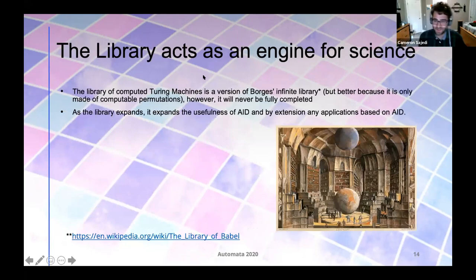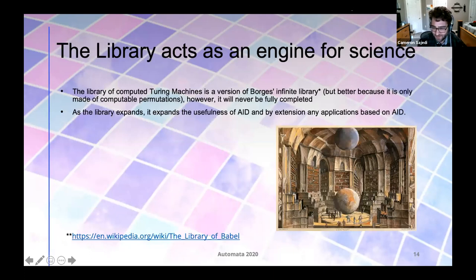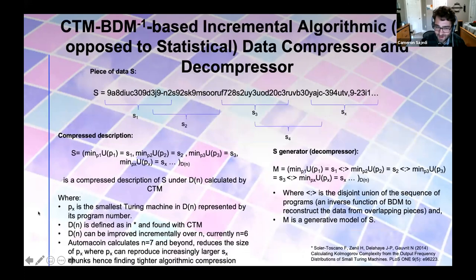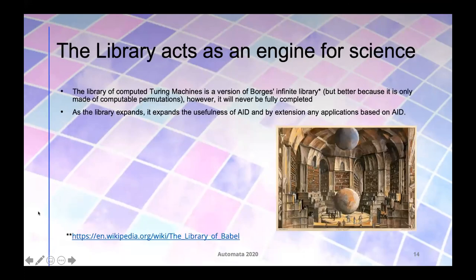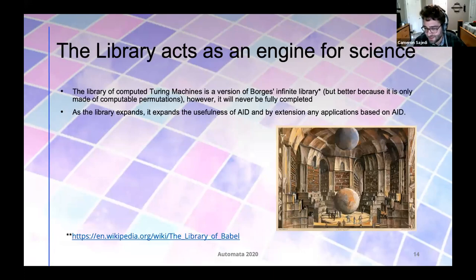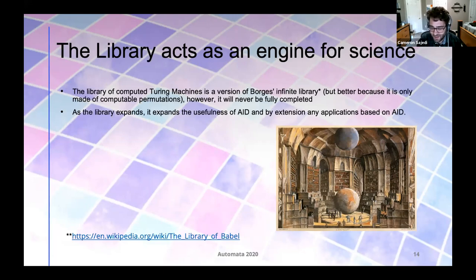Now that you know a little bit about the token, let's talk about the prize. In order for this library that we want to create — which acts as an engine for our science — to be incentivized, we need the token. But the library is definitely the goal. We want to have some sort of Turing tape version of Jorge Luis Borges' infinite library, which is in some ways better because it's made purely of computational perturbations. It will be continuously growing faster than any scholar could possibly cover the ground in the library. Our hope is that as the library expands and fills with scholars, the access given to them will result in AID, and especially CTM and BDM, being applied to new domains and interesting new problems, increasing the usefulness of the library and by extension, the coin itself.